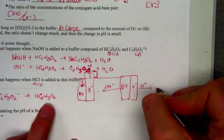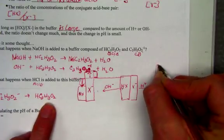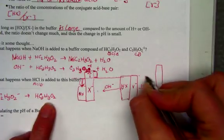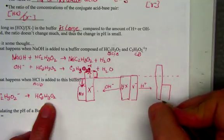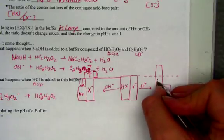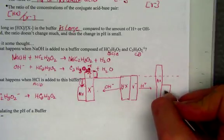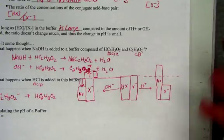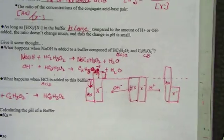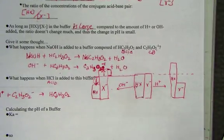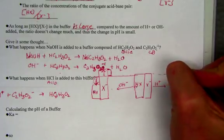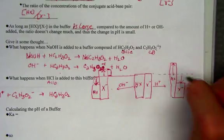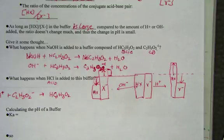And again, considering the equal amounts here, the amount of base that was consumed going down. We made more HX, and we used up X negative. We made more acetic acid as the acetate was consumed. The amount that HX went up in value is equal to the amount that X negative was consumed.